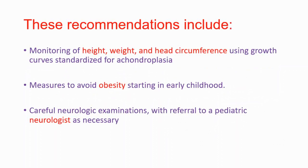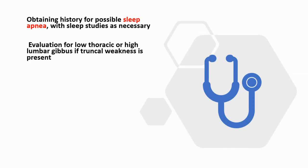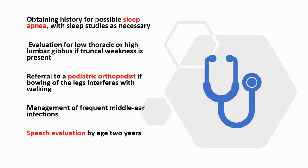Those recommendations include: monitoring height, weight, and head circumference using growth curves standardized for achondroplasia; measures to avoid obesity starting in early childhood; careful neurologic examination with referral to a pediatric neurologist as necessary; obtaining history for possible sleep apnea with sleep studies as necessary; evaluation for low thoracic or high lumbar gibbus if truncal weakness is present; referral to a pediatric orthopedist if bowing of the legs interferes with walking; management of frequent middle ear infections; and speech evaluation by age 2 years.